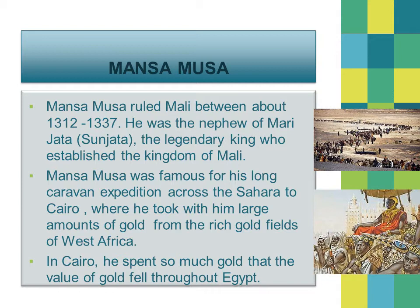When Mansa Musa went to Cairo, being very spendthrift, he spent so much gold buying things there that the value of gold fell throughout Egypt. This demonstrates the basic economic principle: when you have more of anything, the value decreases; when there is scarcity, the price rises — whether it is butter, onions, or precious gold. Mansa Musa had gold in such abundance and spent it so generously that it caused the value of gold to fall in Egypt.